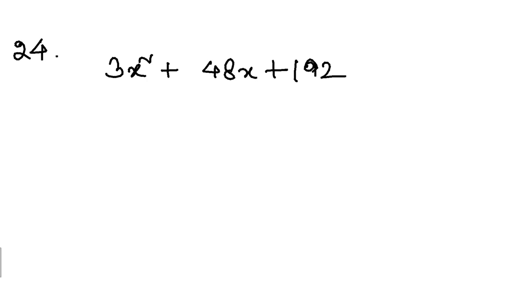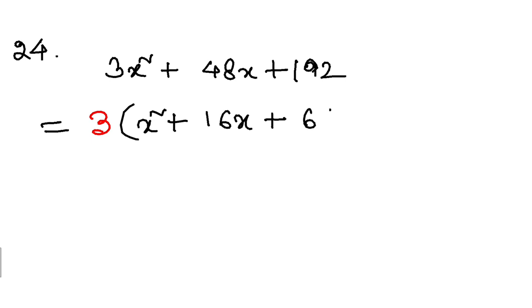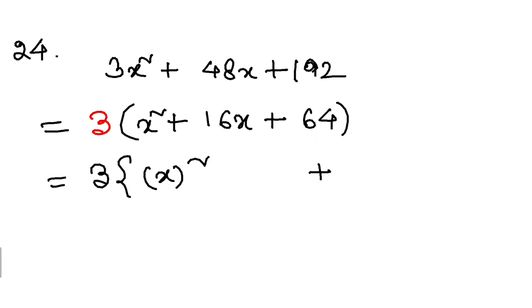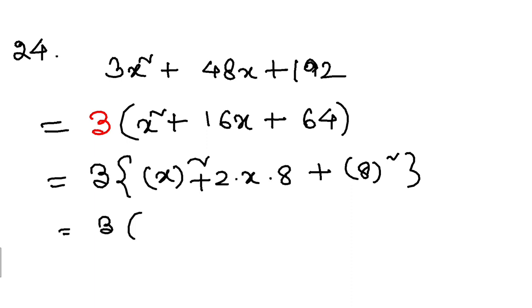Now question 24. Here, 3 is common from all 3 terms, so I will take 3 common. So 3 is out, and I am left with x square plus 16x plus 64 inside the bracket. I can write it as x whole square and 64 as 8 whole square, and this is plus 2 into x into 8. So this is nothing but a square plus 2ab plus b square, giving a plus b whole square.